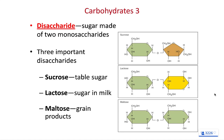Moving on to two-subunit carbs — disaccharides. Our two-subunit sugars are sucrose, lactose, and maltose. Sucrose is table sugar. Lactose is milk sugar. Maltose is a sugar byproduct from grain products — when you think of malted barley, malted hops, or malted rye, these products have maltose in them, and we ferment them to make beer, whiskey, and other fermented beverages.